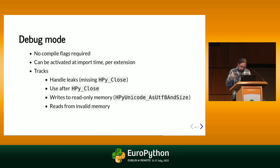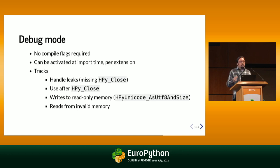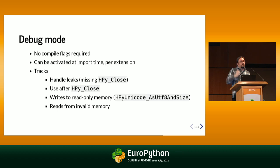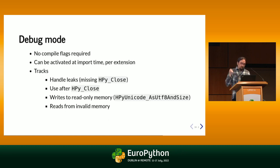You just need to set HPY_DEBUG equals one — set an environment variable — and then you have debug information on uses of invalid handles and also on memory returned by the interpreter. Because we have only one place where the handle is created, we can know if there's a leak and know precisely which handle leaked and which function is responsible for the leak.